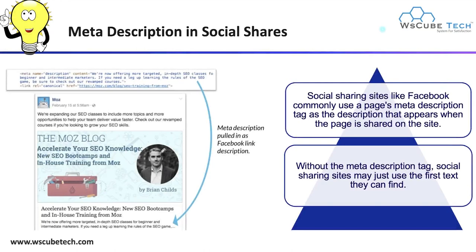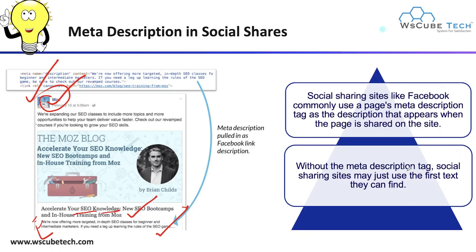Next, let's look at meta description in social sharing. In this example, for a particular website, when we share this site link on Facebook, you can see the company page — and along with the site title, we also get a description. The title is 'Accelerate your SEO knowledge' and this is the meta description we have, which describes something about the website. Social sharing sites like Facebook commonly use a page's meta description tag as the description that appears when the page is shared. Without a meta description tag, social sharing sites may just use the first text they can find on the page.